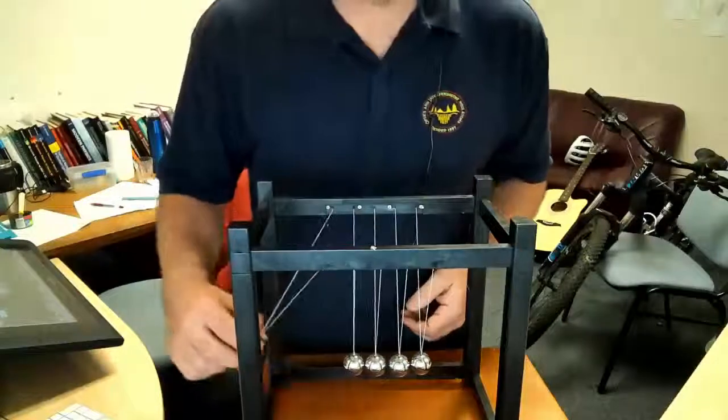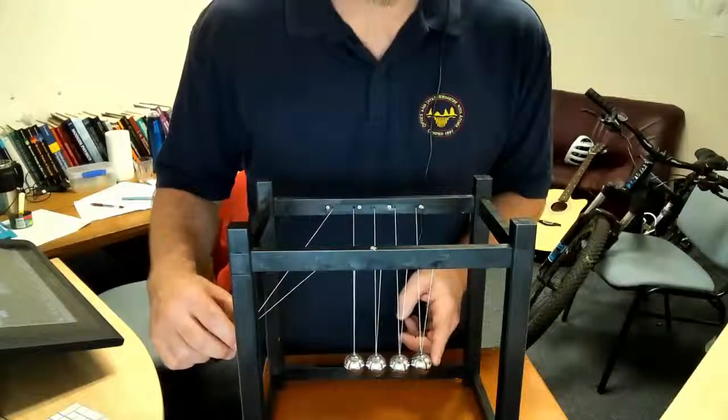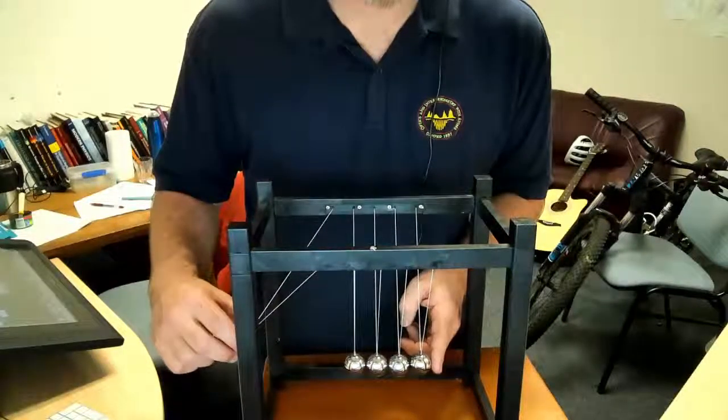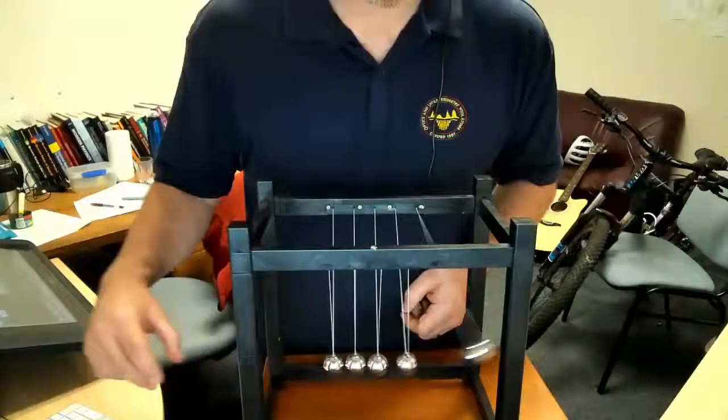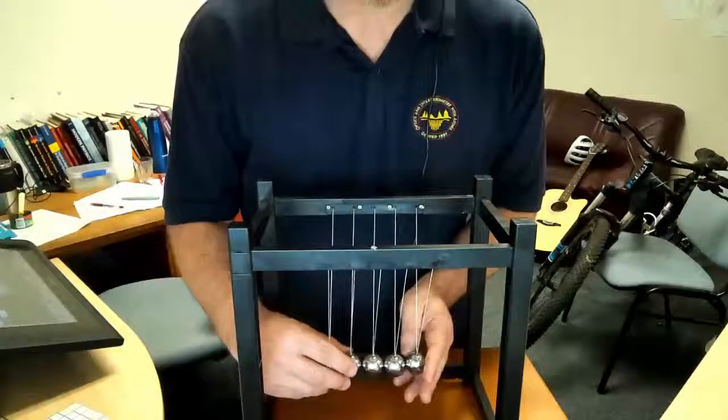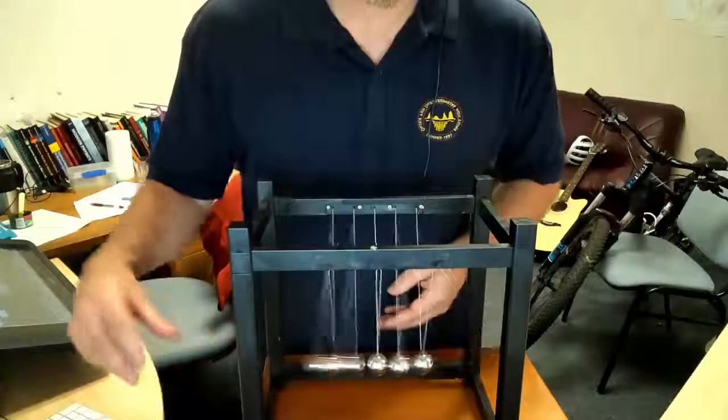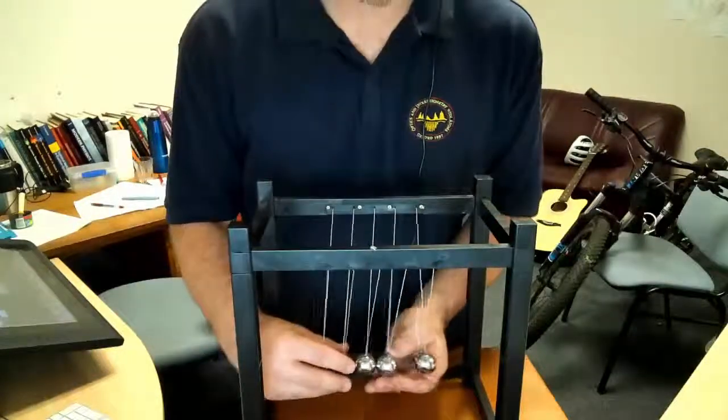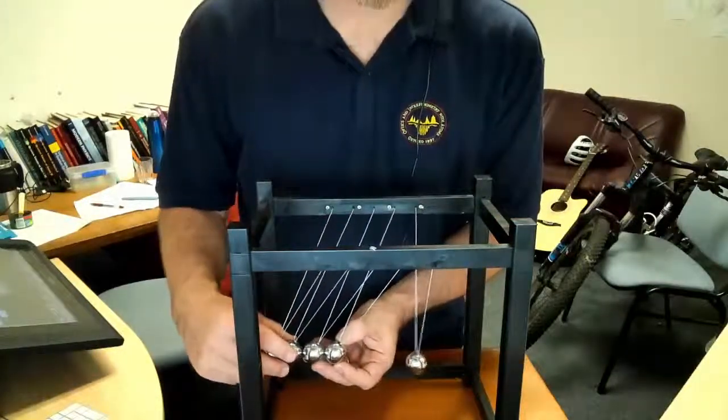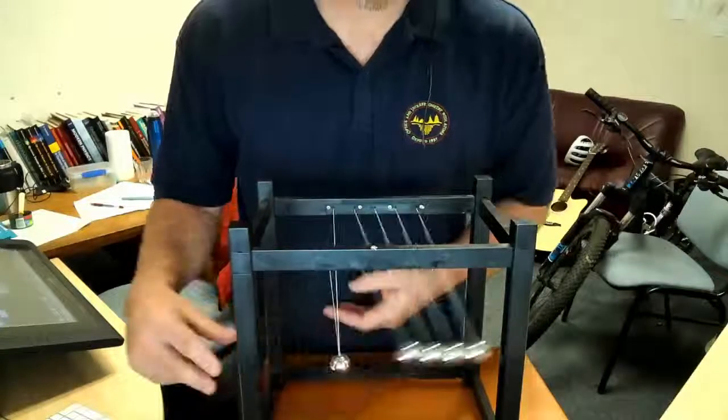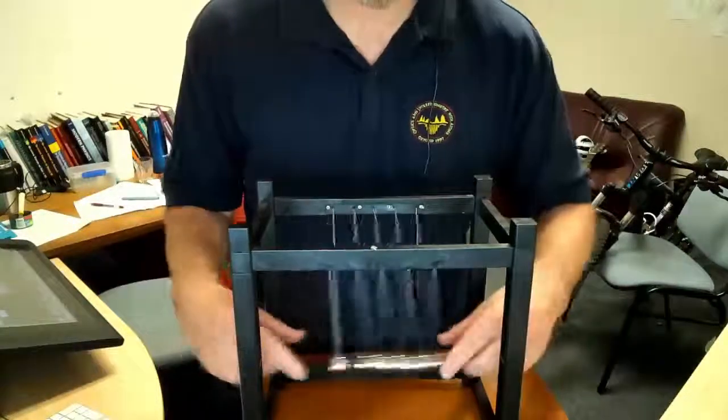So when you have one ball coming in, the only way to conserve both kinetic energy and momentum is if exactly one bounces up. Similarly, if two come in, two bounce up. If four hit, will one fly off fast? No - to conserve both momentum and kinetic energy, four will continue on.